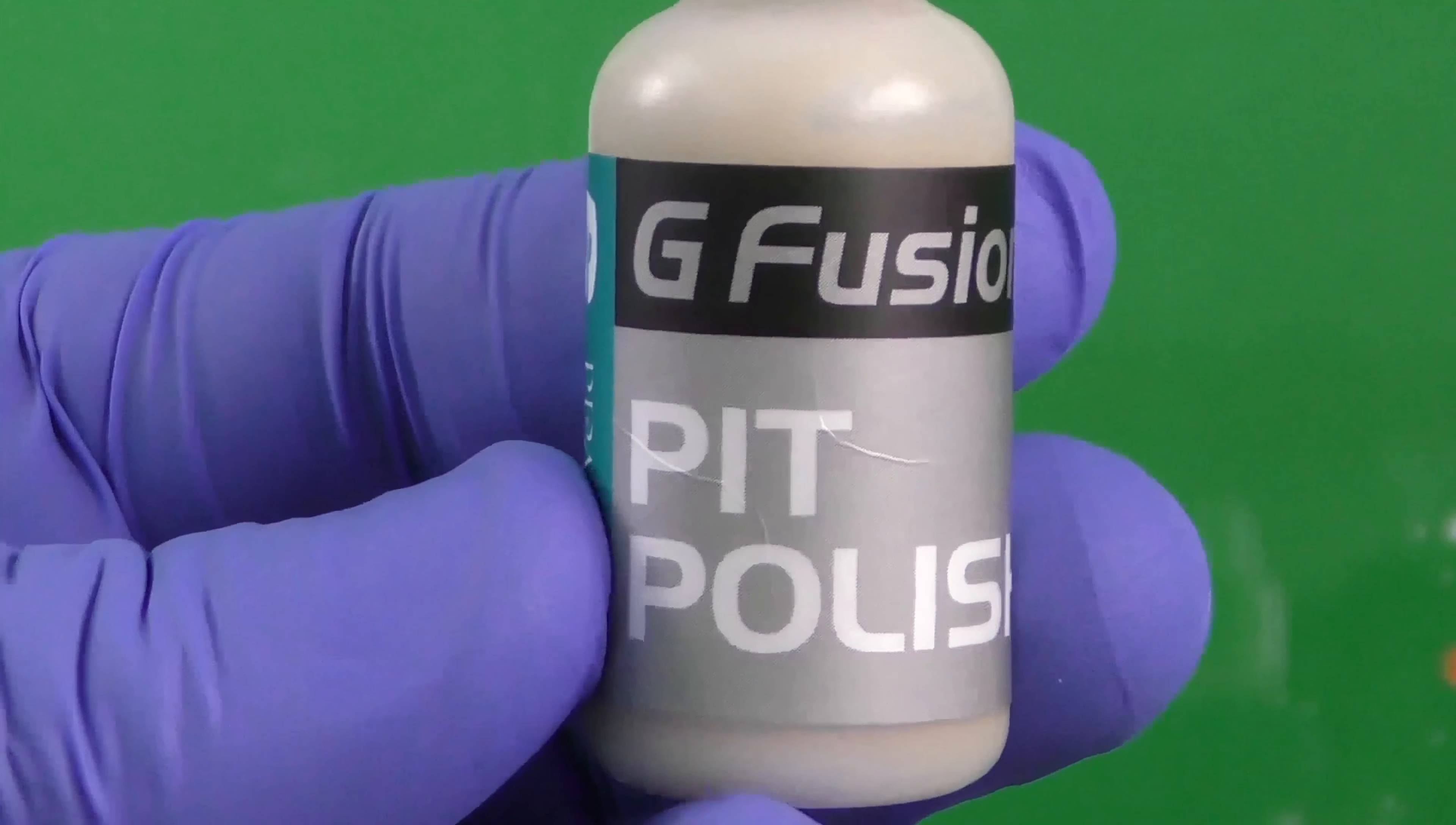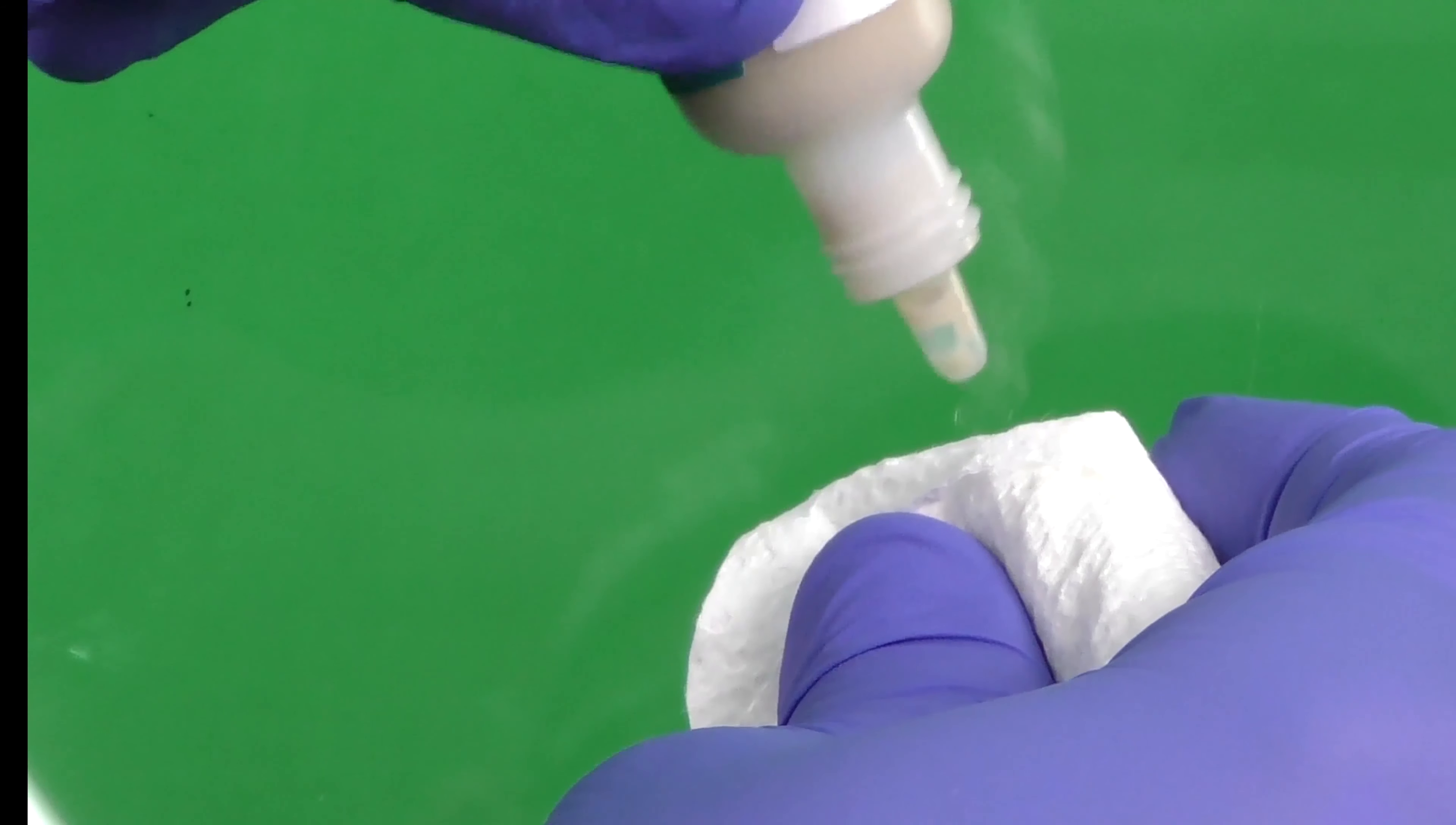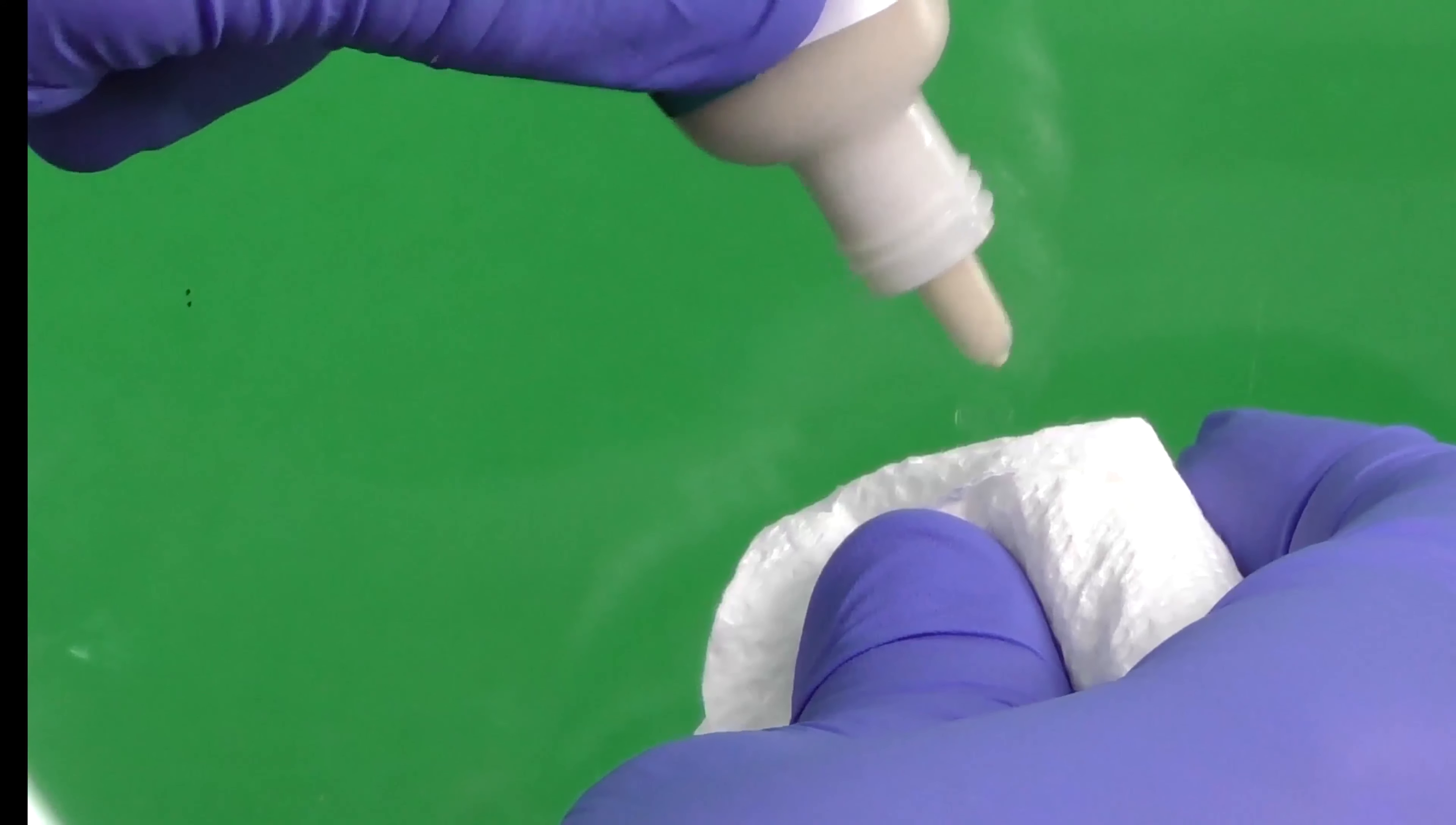Remove the curing tab. Use one drop of pit polish and buff lightly with a towel. This will bring a high gloss to the impact area. And your windshield repair is complete.